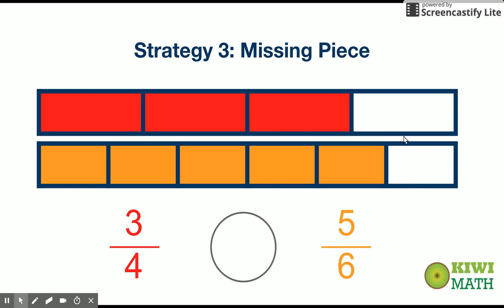You could see that each of these fractions are missing one piece. Visually, you can see that five-sixths is greater — but how do we explain that? How do we prove that five-sixths is the greater fraction? In order to do that, we take a look at the actual missing piece. We could see that three-fourths is missing a greater piece than five-sixths, which means if it's missing a greater piece, then there's less shaded in.